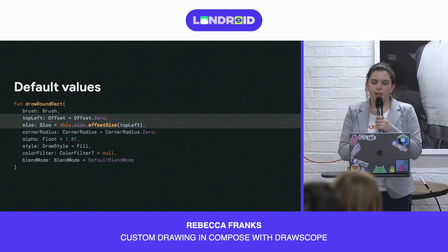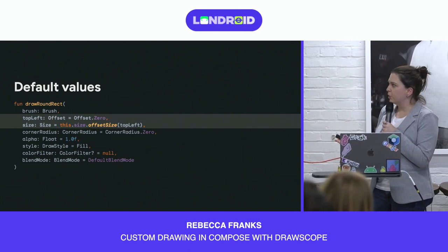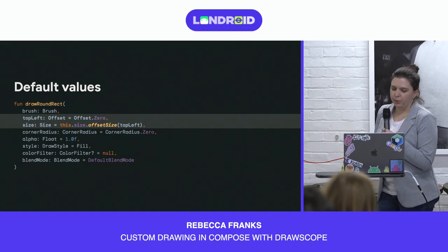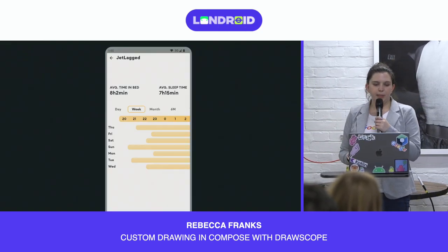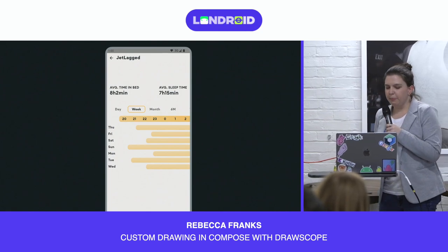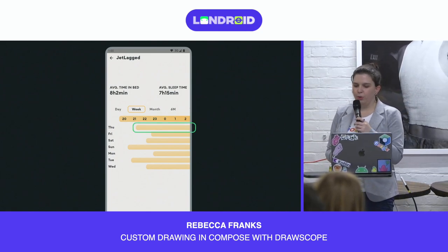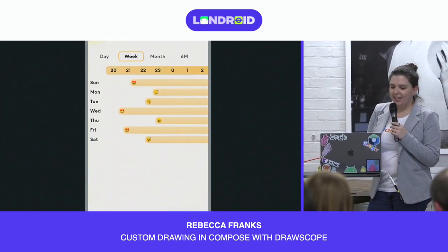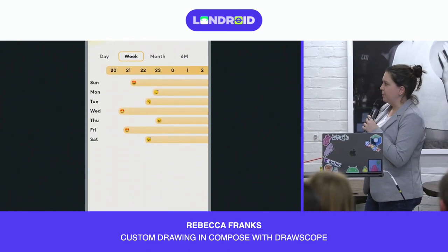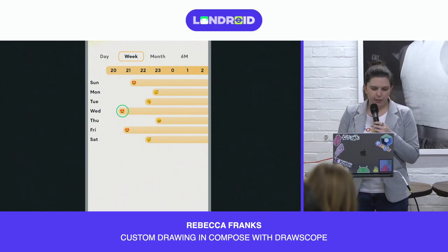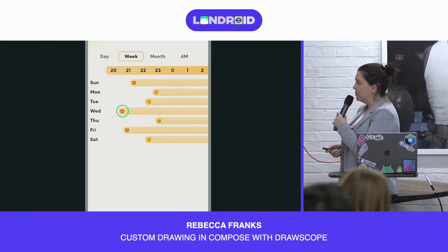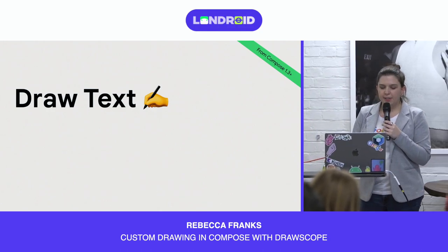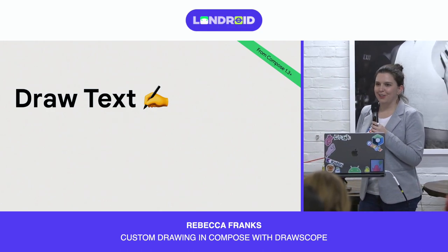If you call draw without setting any values, you're probably going to take up the full size of the composable and it'll be positioned from the top left of your component. Running this code, we can see that the sleep bar is now done, drawn in a rounded box. The next thing we need to draw is the sleep score emoji — just a text emoji. We can learn how to draw text in DrawScope, which has been added in Compose 1.3.